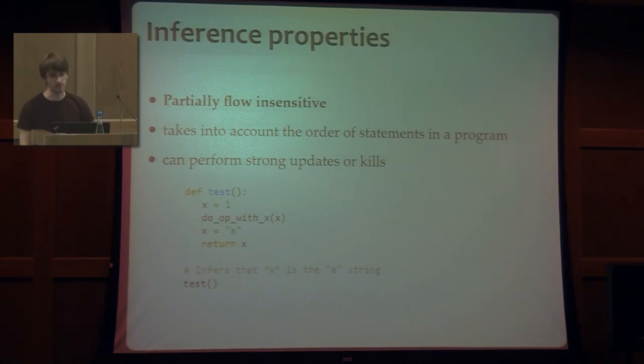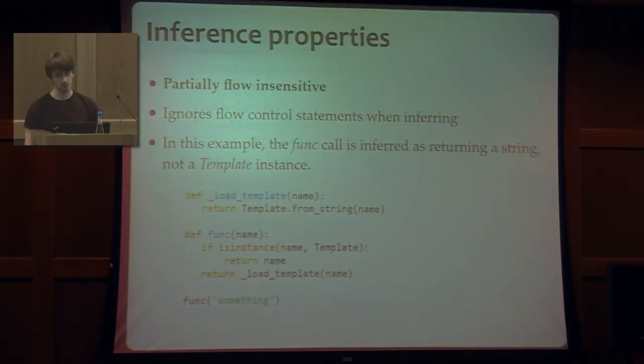And Astroid is partially flow insensitive because we do take into account a part of the order of statements in the programs. And we can perform, for instance, strong updates. A strong update is, like in this example, I'm defining an integer called x. And later on, I have another variable with the same name, which is a string. And Astroid enforced that the result of that function call is going to be a string, not an integer or a union between them. But we are also partially flow insensitive because currently we are ignoring if statements and for loops and while statements. As it is in this example where PyLint doesn't understand that we are going to return a template instance, but instead it thinks we are going to return a string and both a template instance.